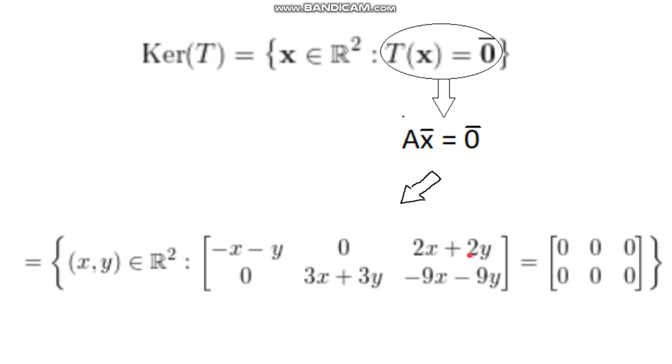So first I'm going to solve for the kernel of T. I'm going to set it equal to the set of vectors x in real numbers squared, such that T of x, or transformation of vectors x, is equal to the zero vector. This is basically like solving for the nullity.